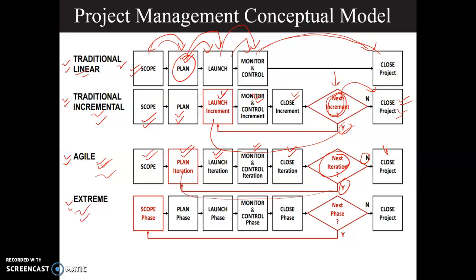In the case of the extreme model, the key feature is that it enables you to change the aim and scope of the project. The rest of the steps are the same as the other models. The new thing is it allows you to change the model's aim and objective according to the client or user feedback.